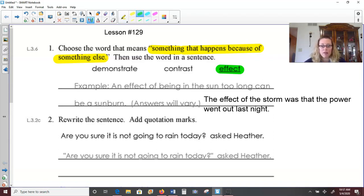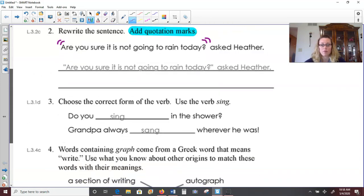Number two says to rewrite the sentence, we need to add quotation marks. Remember when we have somebody talking, we need to put quotation marks around their exact words. So it says, are you sure it's not going to rain today? Asked Heather. So you don't have to rewrite the whole sentence, but we do need to show that Heather is talking. And we're going to put quotation marks in front of R and after the question mark. Because that encompasses all of what she is asking.